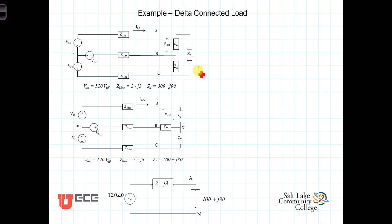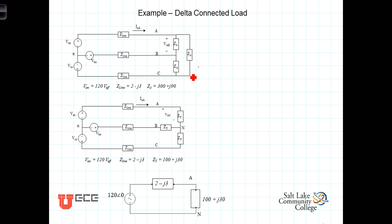As you look at this circuit here, we see that we could analyze it using node analysis with one, two, three defined node voltages, or we could analyze it using one, two, three mesh currents. But a more traditional approach to solving this type of circuit — and when I say solving it, we want to find the power associated with this delta-connected load, or equivalently the voltages and currents associated with each of the phases of this load — is to transform this delta-connected load to a Y-connected load.